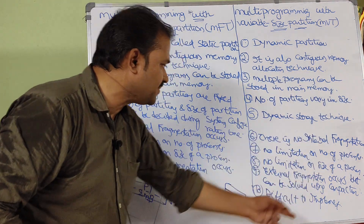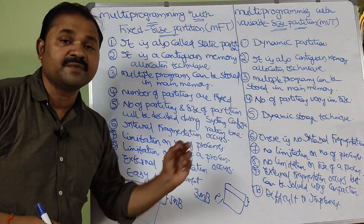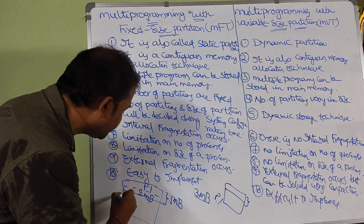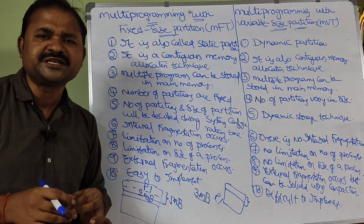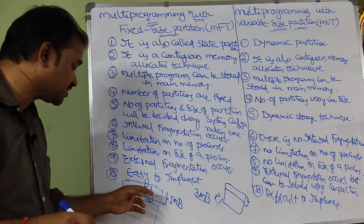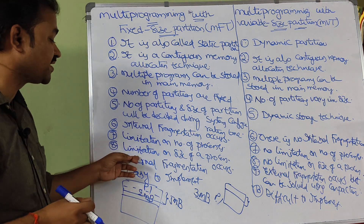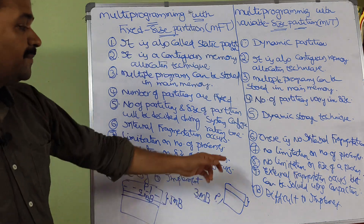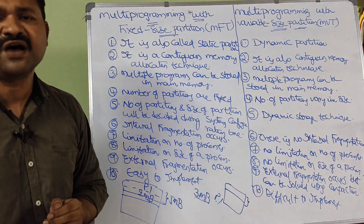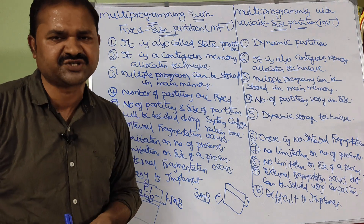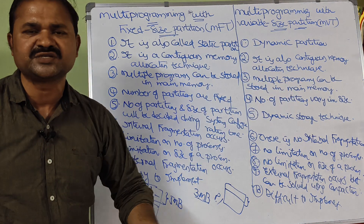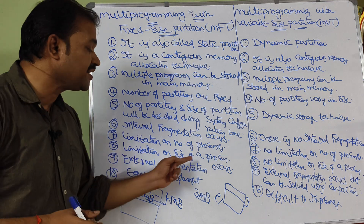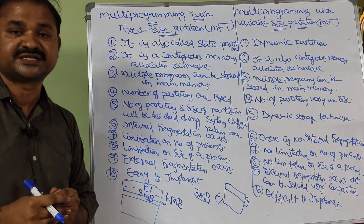The seventh point: MFT has a limitation on the number of processes. If only 3 partitions exist, the operating system can store only 3 processes simultaneously — this is decided during system configuration time. In MVT there is no limitation on the number of processes: if we have 20 processes and the main memory size permits, all 20 processes can be stored in memory.